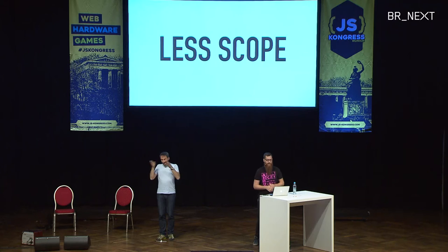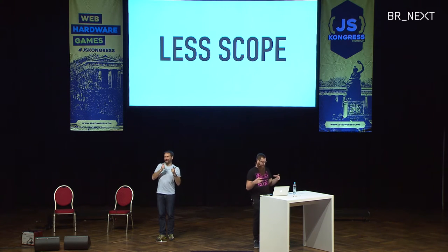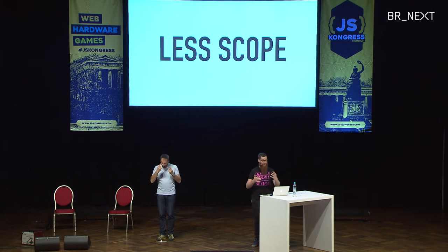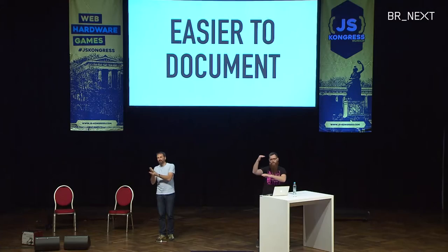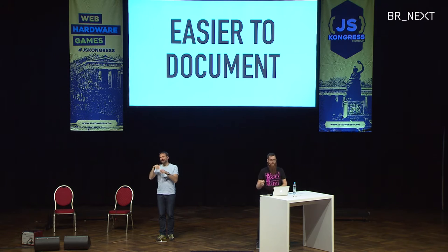The meta thing here is less scope. More scope is the death of all software, so less scope is the life of all software. The idea is smaller, distinct pieces of functionality that are easier to understand, easier to reason about, and easier to keep in your head. They're also easier to document. One of the things software always lacks is documentation, especially internal documentation. If you have a module with a readme covering API, architecture, internals, and roadmap, it's much more likely to actually be written.